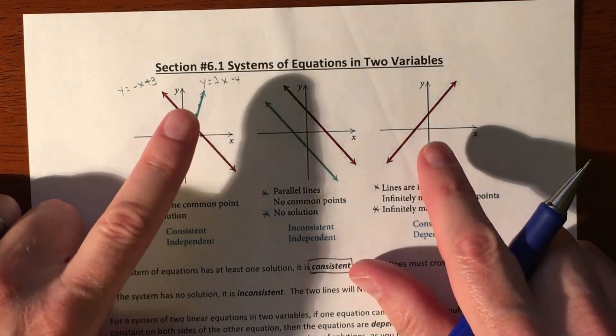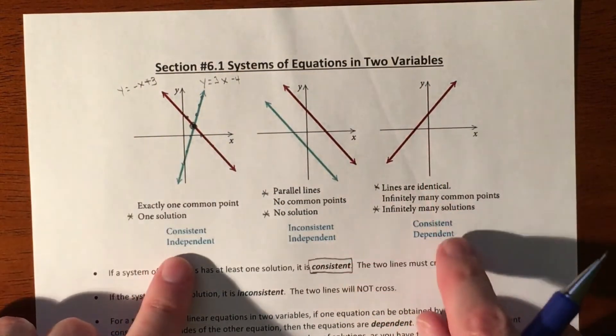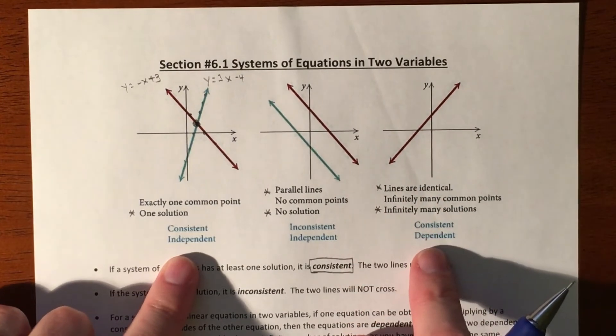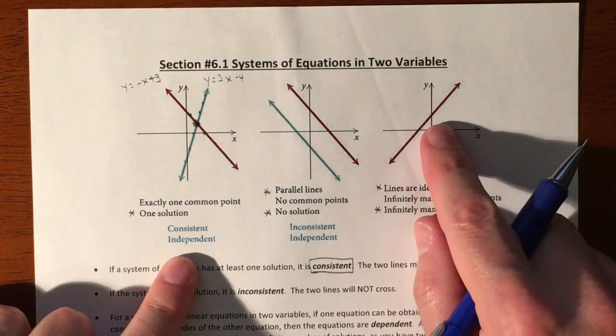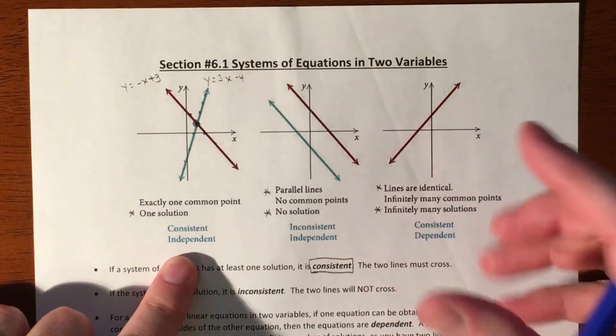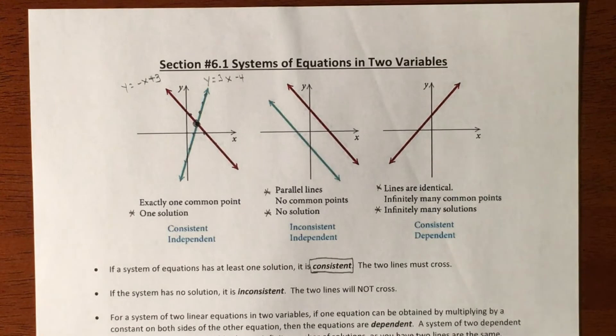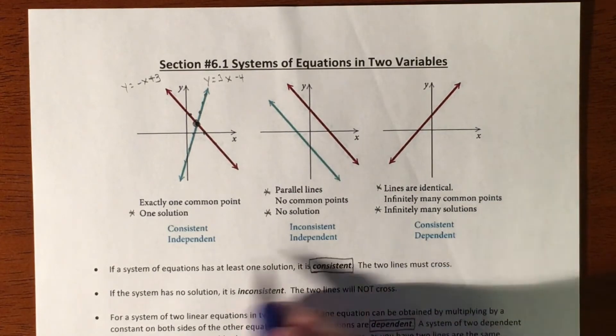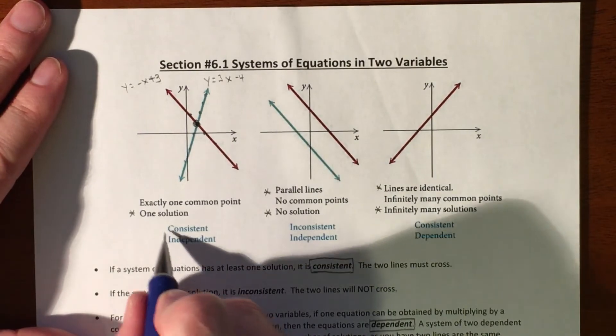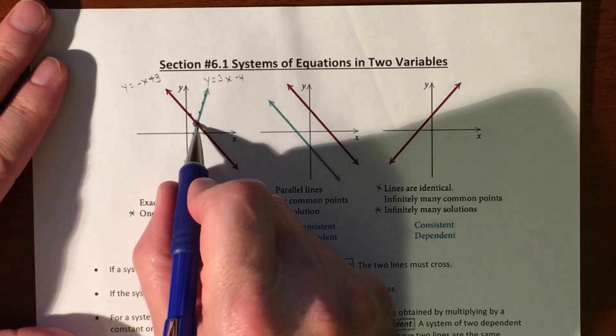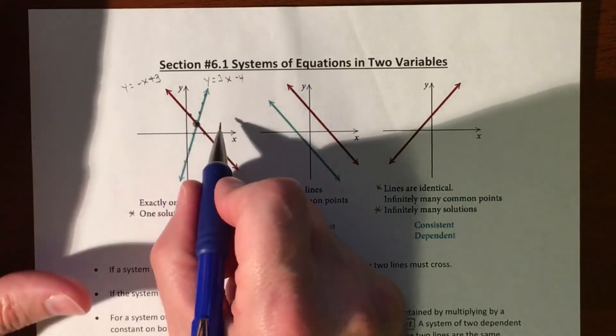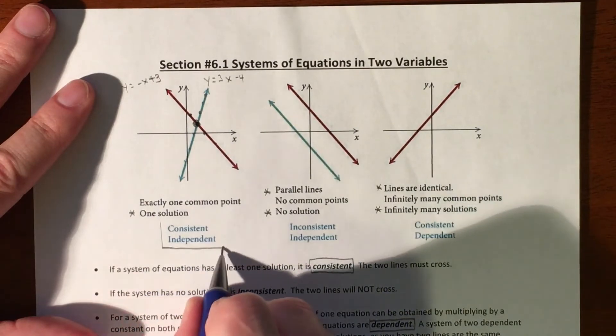The difference between one solution and infinite solutions is the next part. In order for these lines to be exactly the same, they have to be what's called dependent. One line is exactly the same as the other line, so if you have infinite solutions, it's called dependent. If infinite solutions are dependent, then one solution is independent. Having one solution means you have a solution, which makes it consistent, and the lines aren't dependent upon each other whatsoever. So it's called consistent and independent.